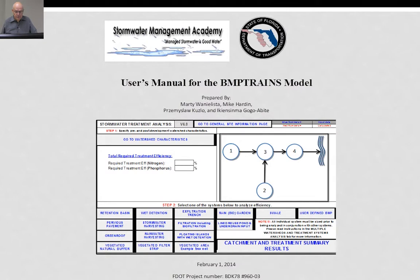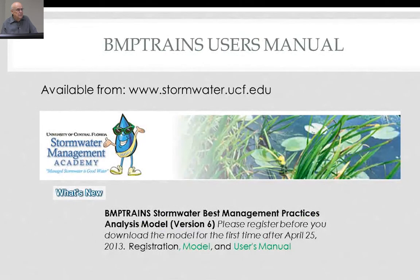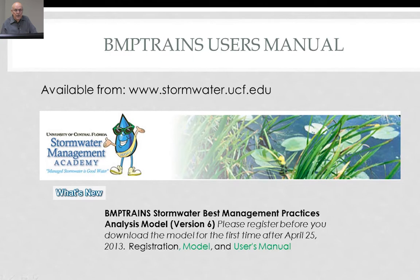This is a screen capture of what you're looking at as you go further into executing the BMP trains model. The user's manual, as well as the model, can be downloaded from the website www.stormwater.ucf.edu. The version we're talking about is version six. We constantly update the model depending on the needs of the professional community and the type of questions we get, so we may have more BMPs to add in the future. You may see different versions, and you're encouraged to go back to the stormwater.ucf.edu website to see if there's a new version.